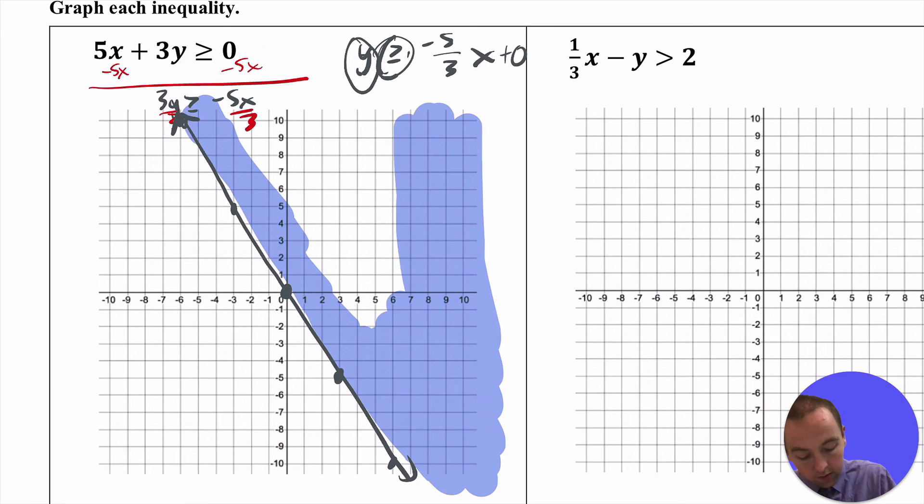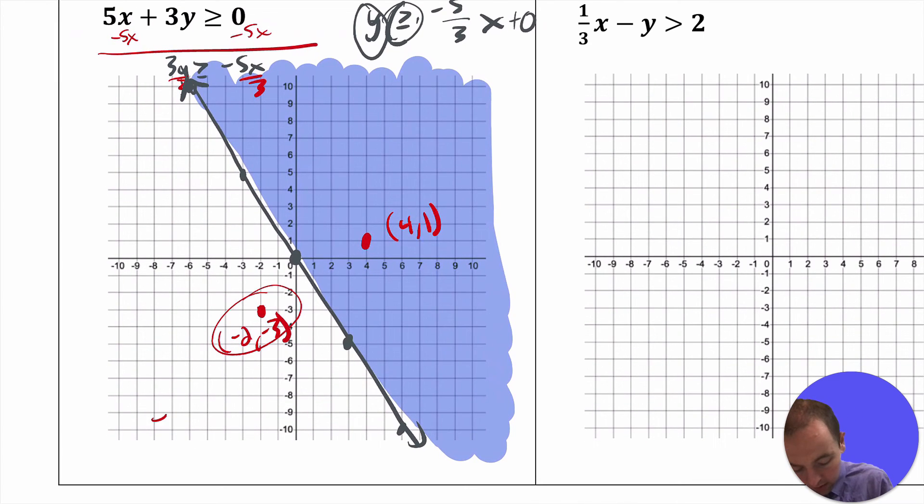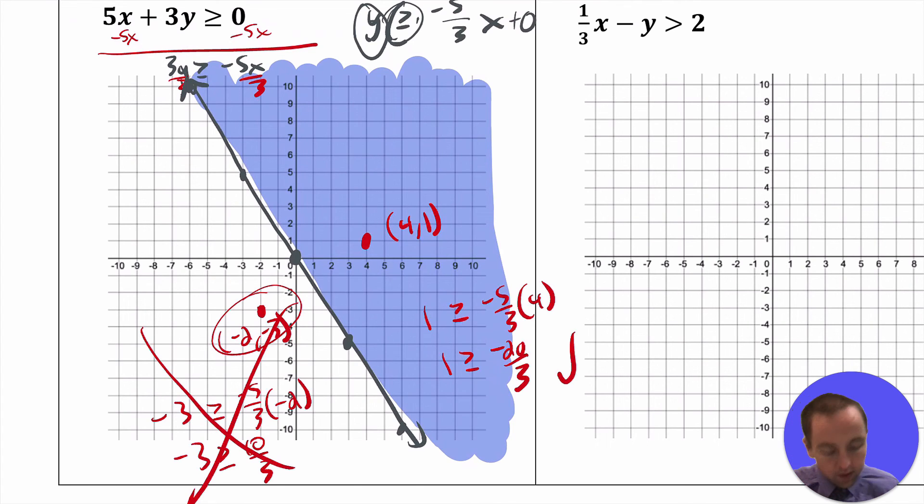Now if you wanted to make sure that you've actually shaded the correct side, you can choose a test point on both sides of the line. So if you wanted to test, let's say, this point right here, negative 2, negative 3, then you could plug that in. And then you could plug in a point on this side of the line, say 4, 1. And whichever one satisfies will tell you which side of the line is the correct one. So if you chose this one, you could put in y greater than or equal to negative 5 thirds times negative 2, negative 3 is greater than or equal to 10 thirds. Well, obviously that's not true. So that tells you that that's not going to work. But this point should work that if this is your y, and then negative 5 thirds times 4, you end up getting y is greater than or equal to negative 20 thirds. And of course that is true. So you know that that test point works. It just tells you that you've chosen the correct side to kind of have shaded right there. So really just having that solid line and the shading there, that's going to give you the solution set that's going to graph that particular inequality.